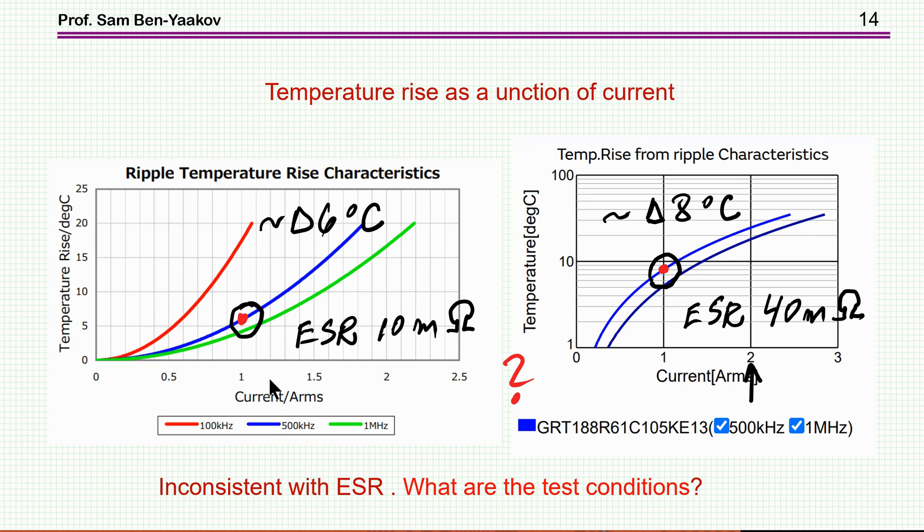Next, I'm comparing the current carrying capability as shown in the data sheet by the two vendors. This is the TDK. This is the Murata, and they don't have the 200 kilohertz, so I look at the 500 kilohertz here, and there is the 500 kilohertz here. This is this blue, and it turns out that this is also the blue. And let's look at the 1 amp. It says here that 1 amp will increase the temperature by about 6 degrees, while here, 1 amp will increase the temperature by about 8 degrees.